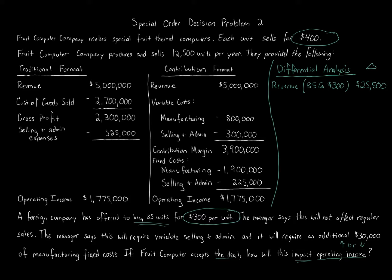Now for variable costs: there are two — manufacturing and selling and administrative. We need to calculate the variable manufacturing cost per unit since it's given in total. Taking $800,000 of total variable manufacturing costs and dividing by 12,500 units produced and sold gives us $64 per unit for manufacturing.